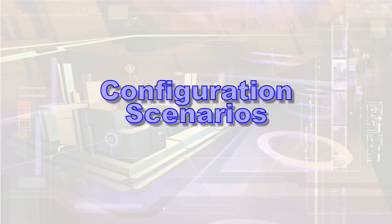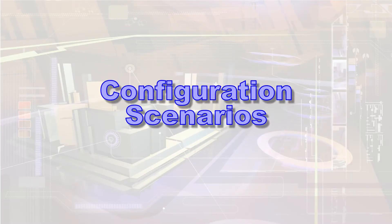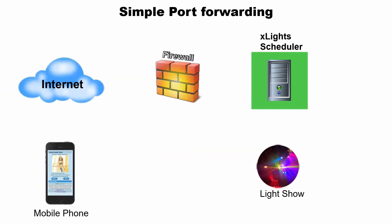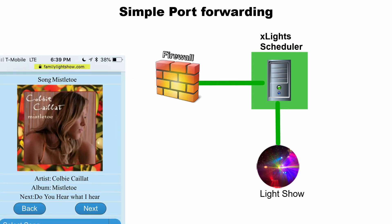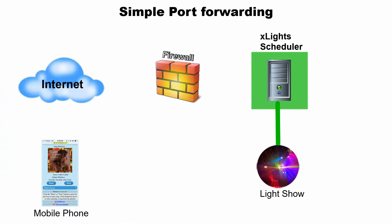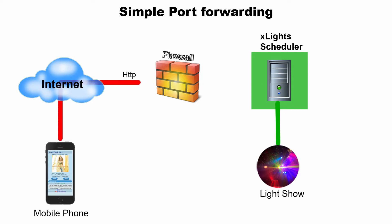Port forwarding is the simplest approach. It requires a firewall rule that redirects traffic on a specific port to the server hosting the X-Lite scheduler. In this scenario, the spectator is provided with a domain name that resolves to the firewall. The issue with this configuration is that the connection is not secure, and although the firewall rule with PFBlocker and SNORT does provide good protection, the scheduler is still directly exposed to denial of service attacks.